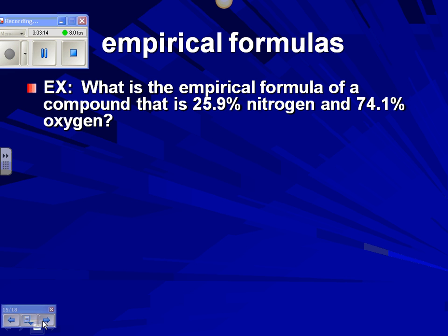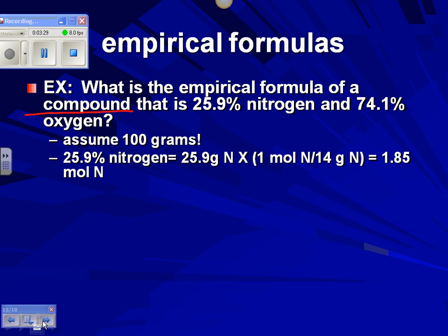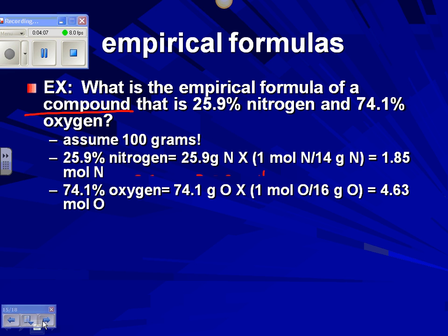If we know the percent composition of a compound but not the specific amounts, the easiest approach is to assume 100 grams. That gives us 25.9 grams of nitrogen and 74.1 grams of oxygen. We then convert grams of nitrogen to moles — one mole is 14 grams — giving us 1.85 moles. We need moles because that's how you compare one element to another; you can't compare in mass since different elements weigh different amounts.